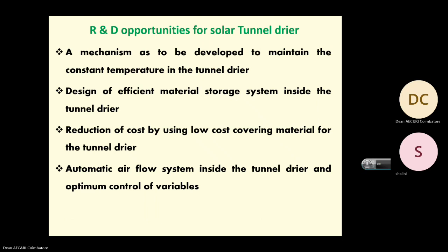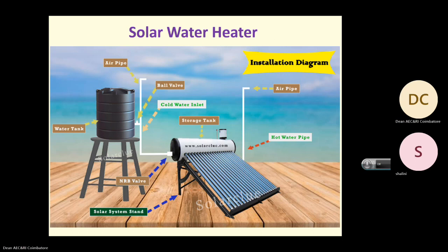For solar tunnel dryers, a mechanism needs to be developed to maintain constant temperature, which is a major problem. From tray to tray there is a difference of six to eight degrees, which has to be brought down to one or two degrees. R&D areas include design of different material storage systems inside the tunnel dryer, reduction of cost using low-cost covering material, and development of an automatic airflow system with optimum control of variables.